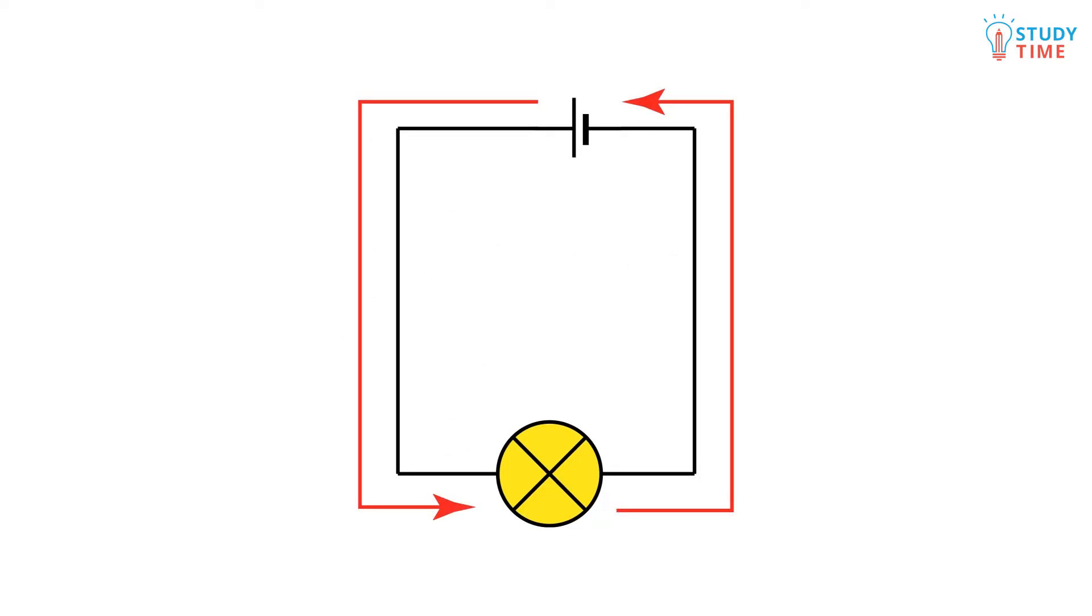Simply think of the wires as pipes and the electricity as water. In a series circuit there's only a single path for the electricity to flow through, just like if the water only had one path of pipes to flow around.